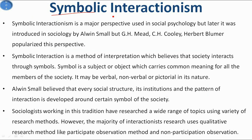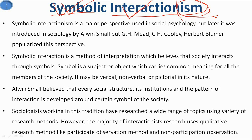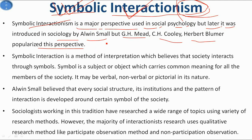First, we consider symbolic interactionism. The word can be divided into three parts: symbol, interaction, and ISM. Symbol means the set of objects, gestures, oral and non-oral, which carries a common meaning for all members of society. Interaction means the exchange of feelings and needs between two or more persons. ISM is the perspective to understand anything. Symbolic interactionism was introduced in sociology by Albion Small, but G.H. Mead, C.H. Cooley, and Herbert Blumer popularized this perspective.